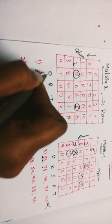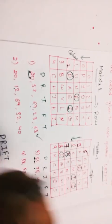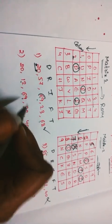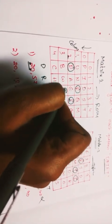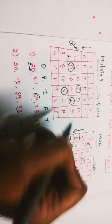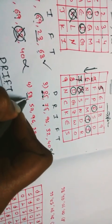Checking option two: 2,0 — D is satisfied. Next 1,2 — R is satisfied. Next 6,9 — I is satisfied. Next 2,3 or 3,2 — checking carefully: 2,3 gives F is satisfied. For the last pair 5,8 — we find the letter at column 5, row 8 is S, not T. So this position gives S where we need T. Therefore this option is wrong.